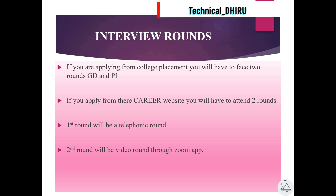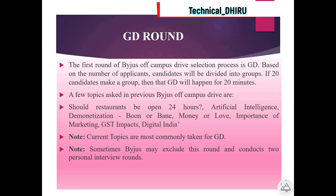The first round of the BYJU'S campus drive selection process is the Group Discussion (GD) round. Based on the number of applicants, candidates will be divided into groups. If 20 candidates make a group, then that GD will happen for 20 minutes. A few topics asked in previous BYJU'S drives are: should restaurants be open 24 hours, artificial intelligence, demonetization — boon or bane, money or love, importance of marketing, GST impacts, Digital India. Note that current topics are most commonly used for GD.